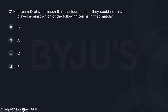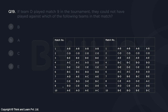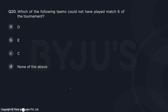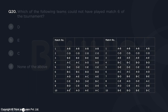Next: if team D played match nine, which team could D NOT have played against in that match? Looking at the cases, D played against B in one scenario, against E in others, and against A — but D never played against C in match nine in any case. So the answer is option C. And for the final question: which team could NOT have played match six? Match six is played by B, C, D, and A across the various cases — but E never plays match six. So the answer is option B, which is E.